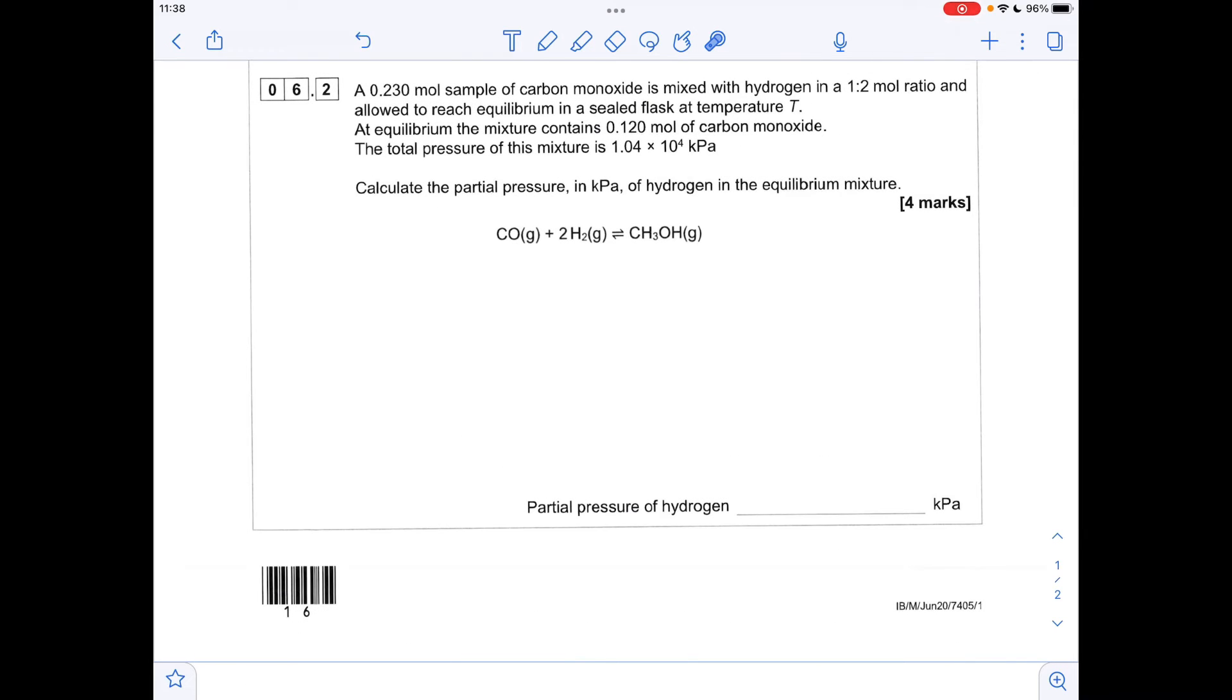Moving on to part two, we've got to calculate the partial pressure of the hydrogen in the equilibrium mixture. We're going to need to calculate the mole fraction for the hydrogen, then multiply by the total pressure, and that will give us the partial pressure. The way I'm going to do this, I call it an ICE calculation, because we're going to calculate the initial moles, the change in moles, and then the equilibrium moles of all the species.